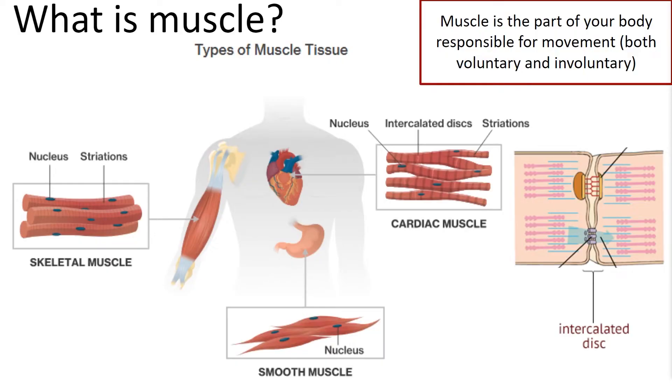Cardiac muscle is what's used to form our heart. Skeletal and cardiac muscle have some pretty cool unique features associated with their function, so let's take a closer look at them. Skeletal muscle comes in all shapes and sizes, but individual cells that make up this tissue can be quite long.